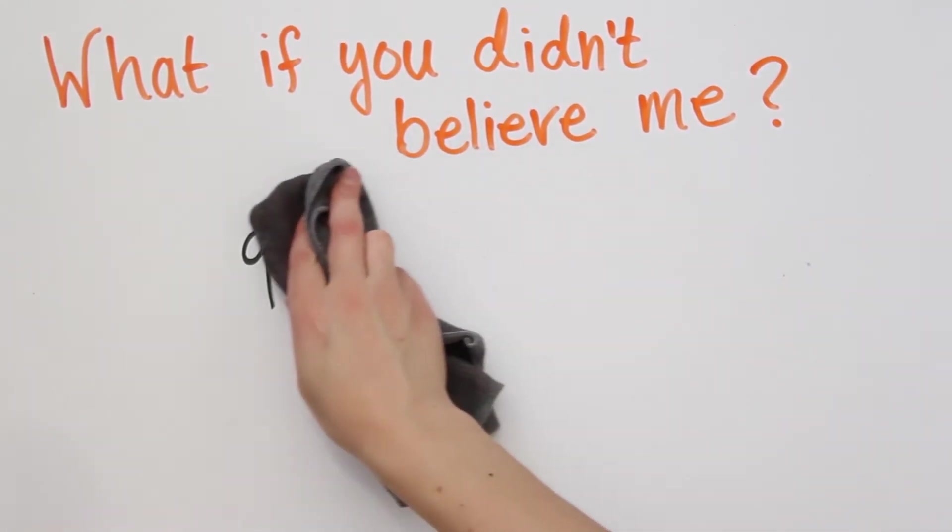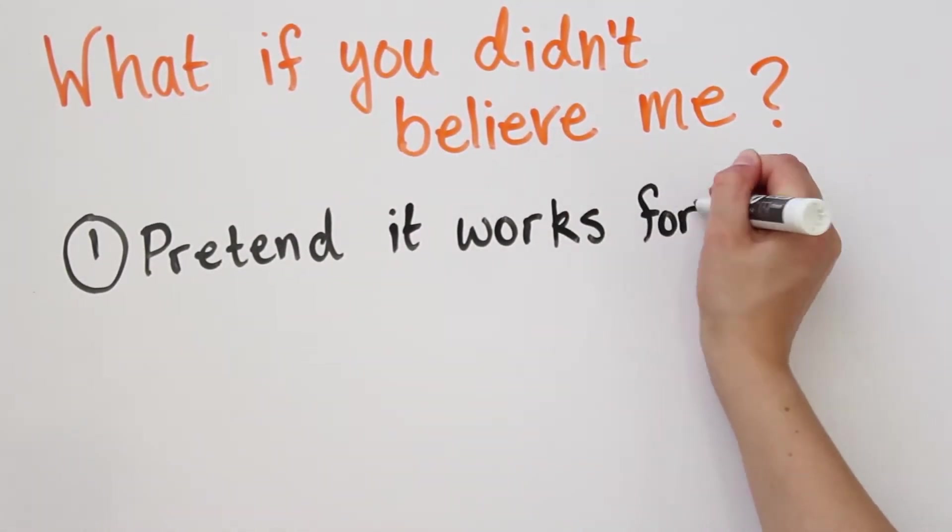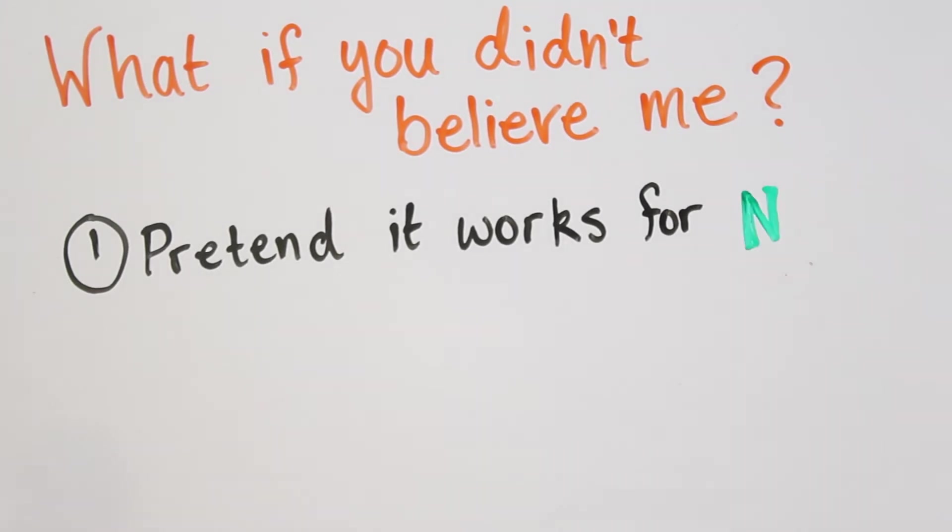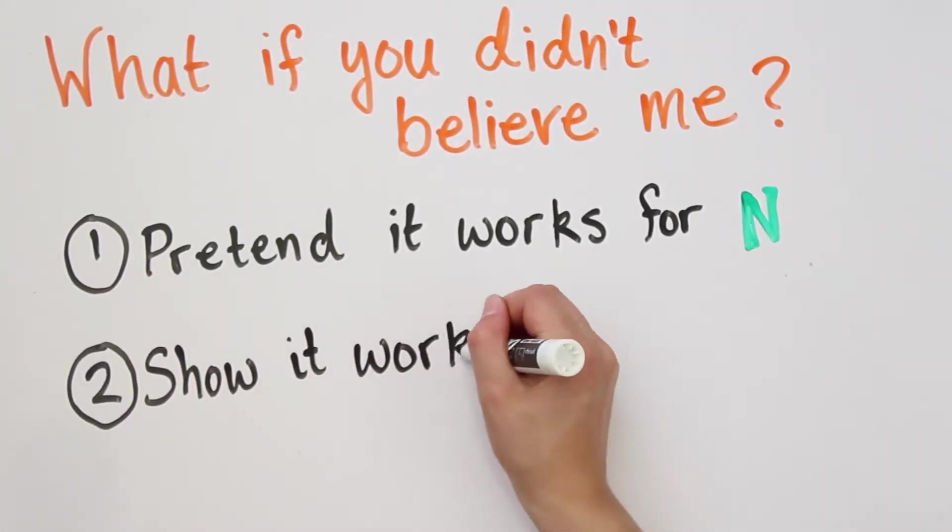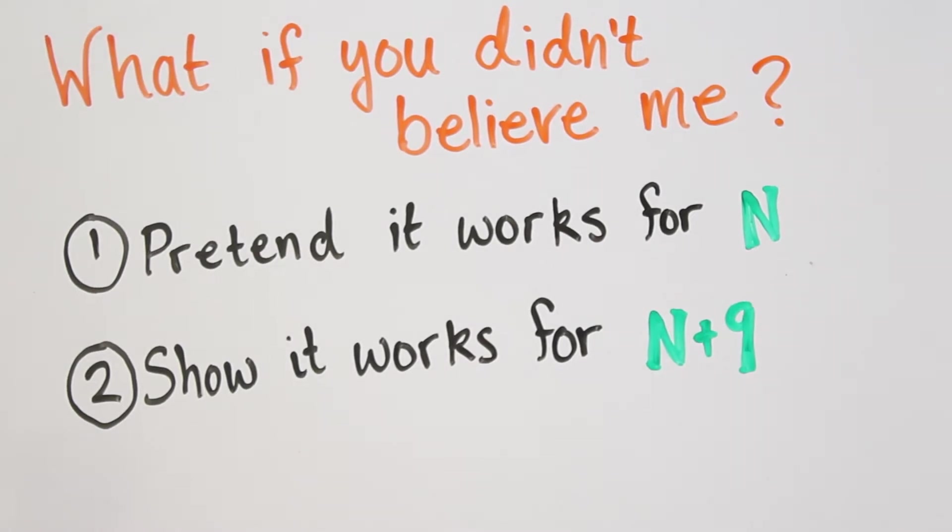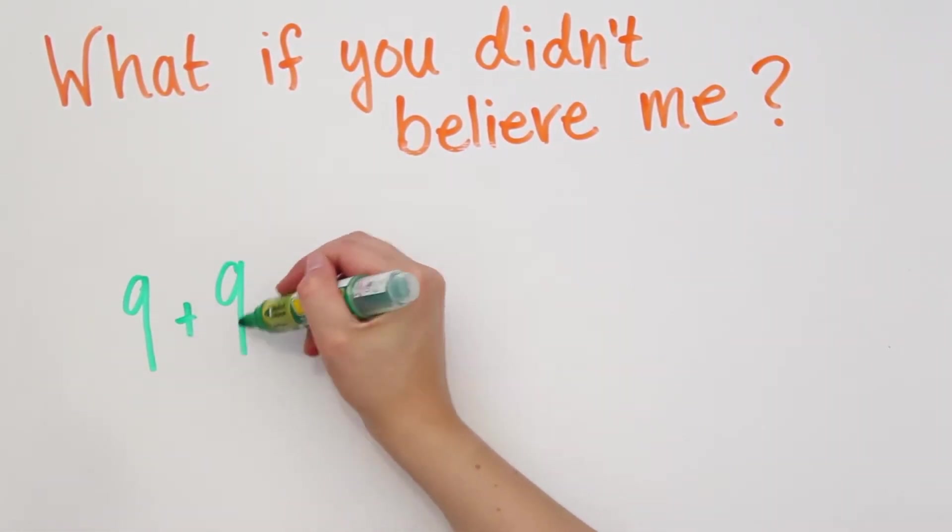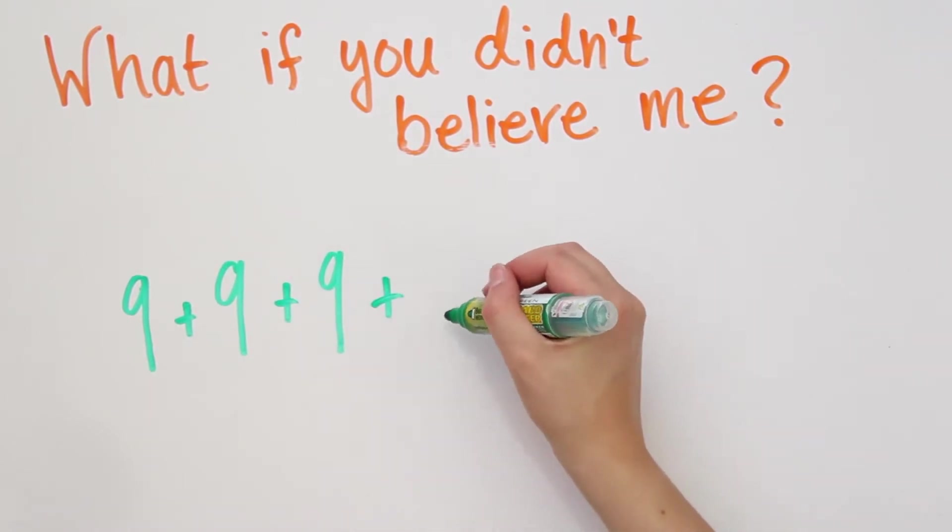Now, to show it works for all multiples of 9, we'll start by pretending it works for some multiple of 9, called n. Then we will show that n plus 9 also satisfies the trick. Since we know that the trick works for small multiples of 9, and we can build every multiple of 9 by just adding 9, then we can conclude that the trick will always work.